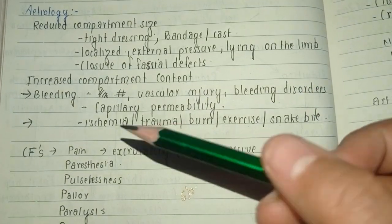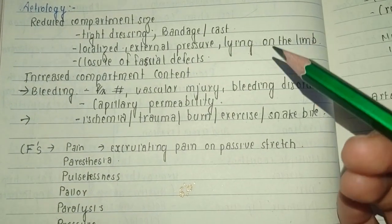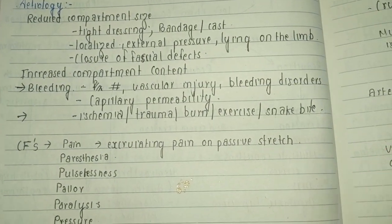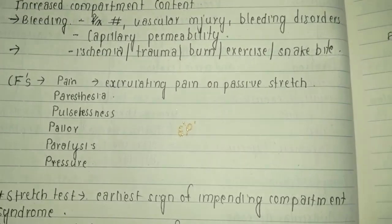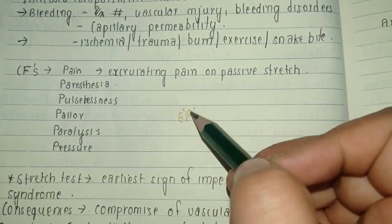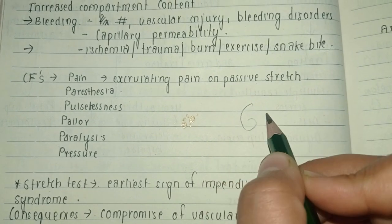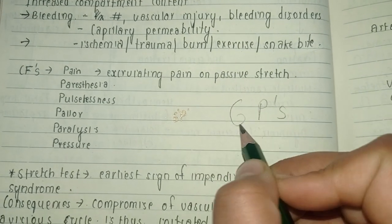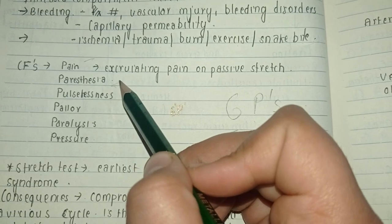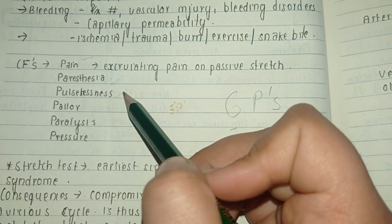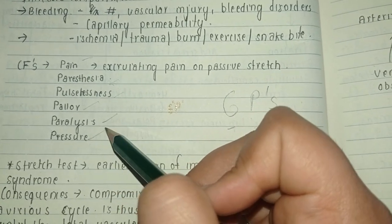There can also be increased compartment content, which can occur due to bleeding — vascular injury, bleeding disorders — or an increase in capillary permeability, which can lead to an increase in compartment content.